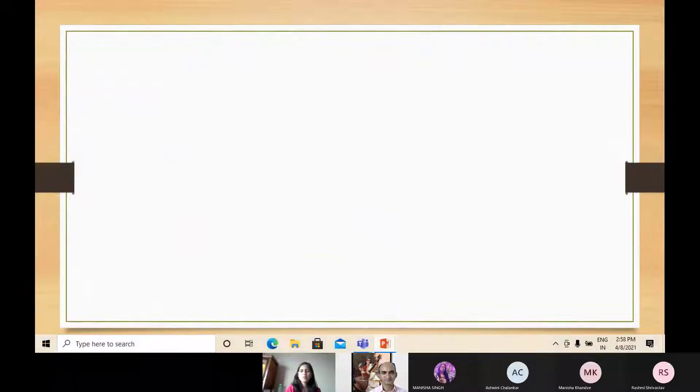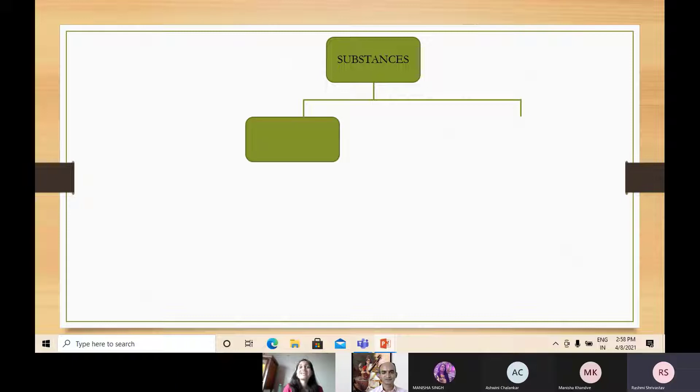So here we go. We are talking about substances, right? We can divide substances into two broad categories. Can you tell me? Natural and man-made. So first we will talk about natural. What are the natural substances? The substances which are found naturally, which we are getting from the nature and we are using directly, right? We can separate these substances into further categories.